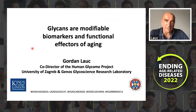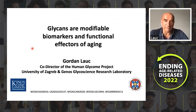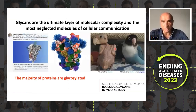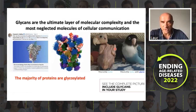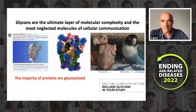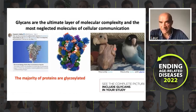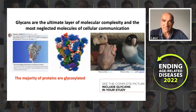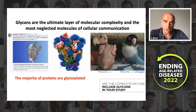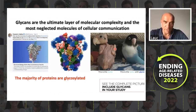I will tell you something about glycans, which we believe are the modifiable biomarkers, but also functional effectors of aging. Not so many people are familiar with glycans, so I will just shortly say that they are the ultimate layer of molecular complexity, but at the same time they are the most neglected molecules of cellular communication.